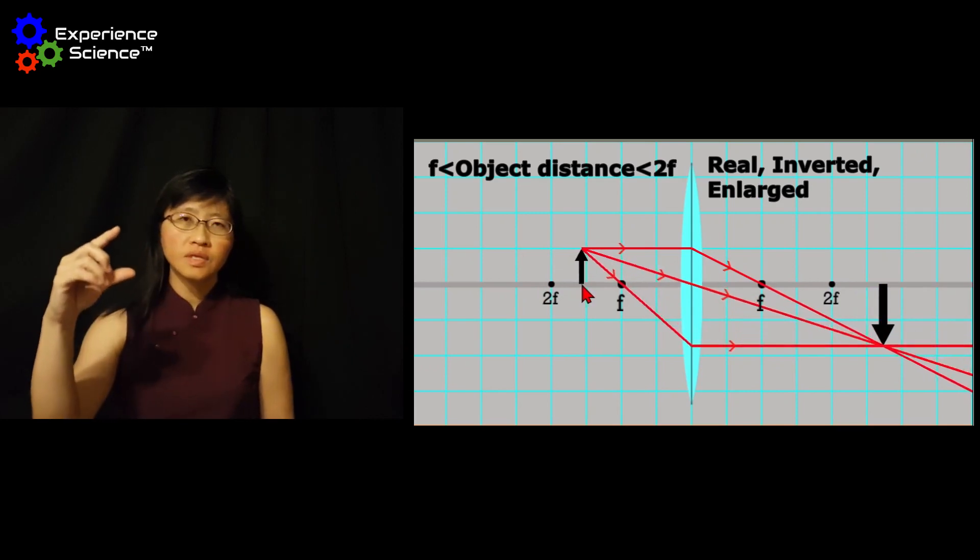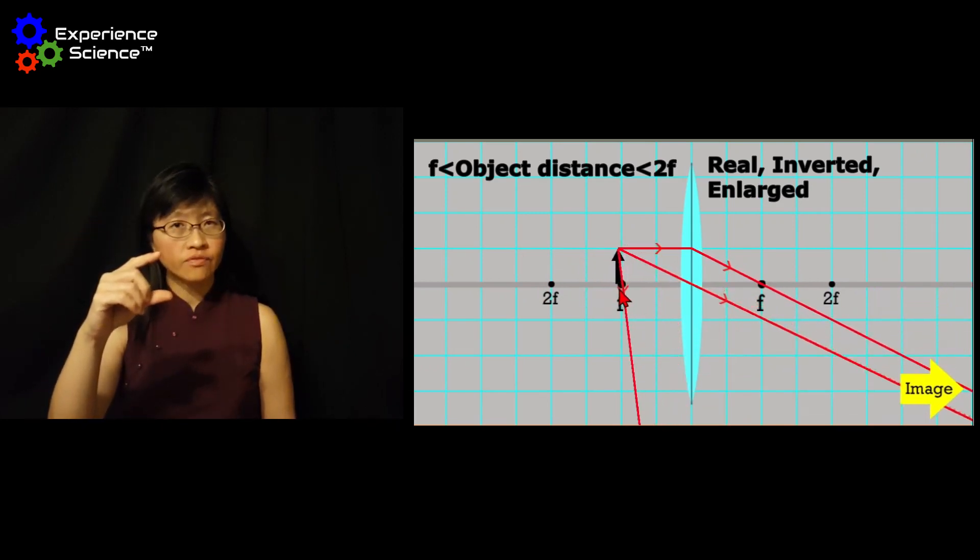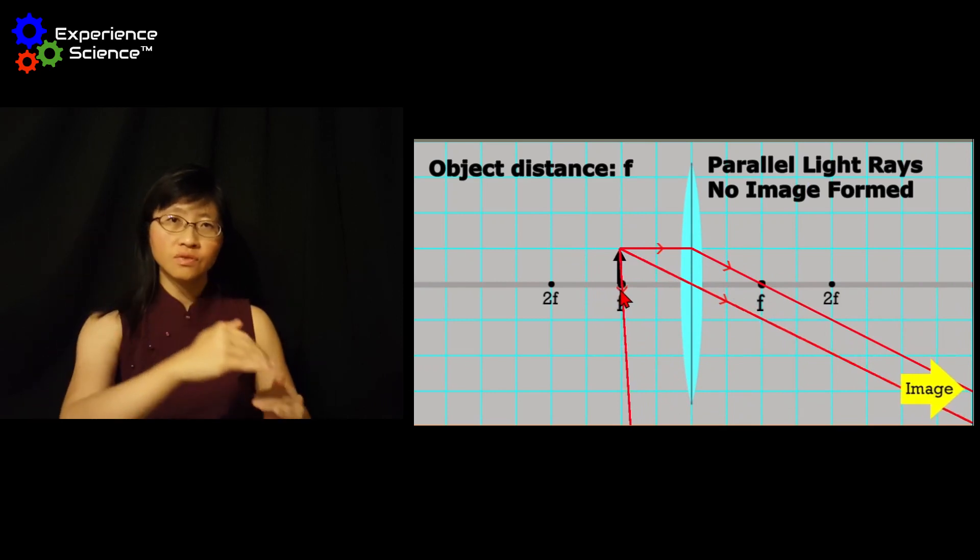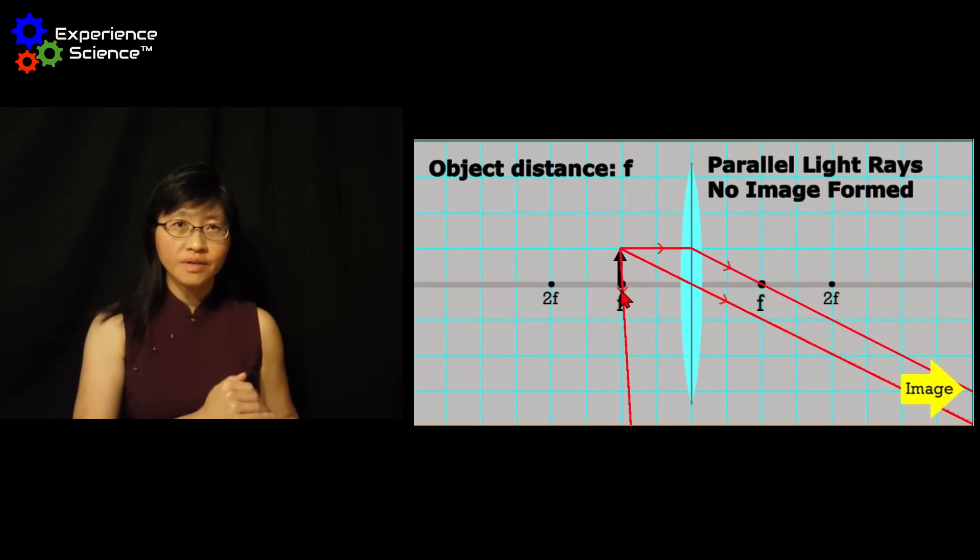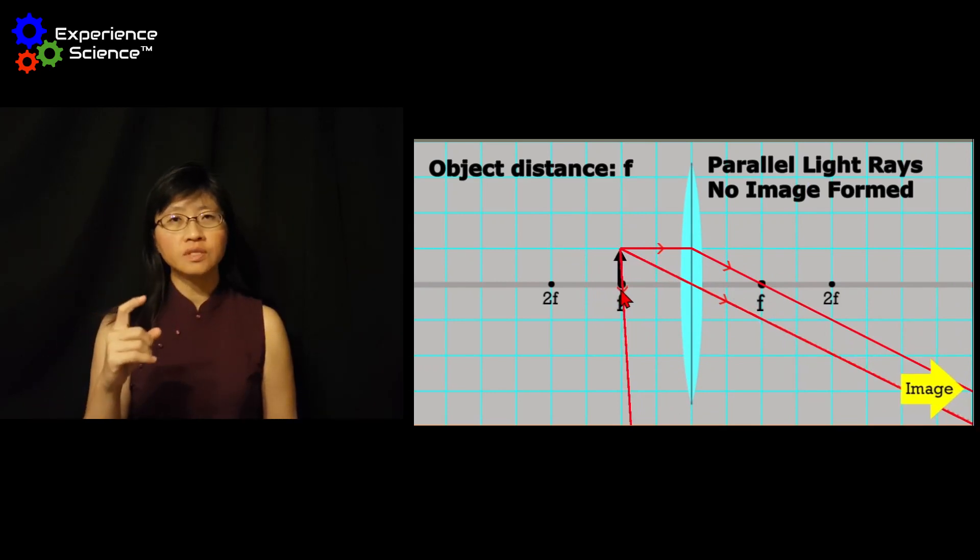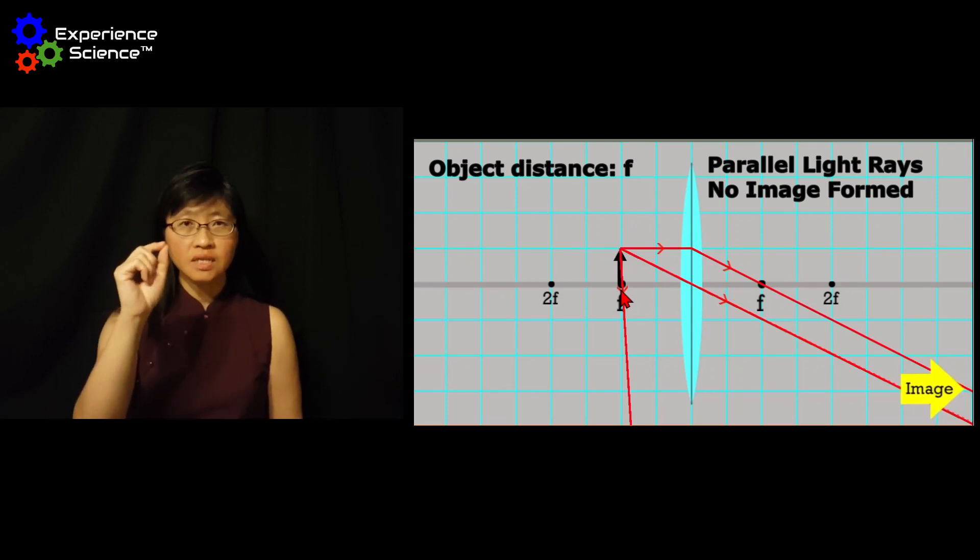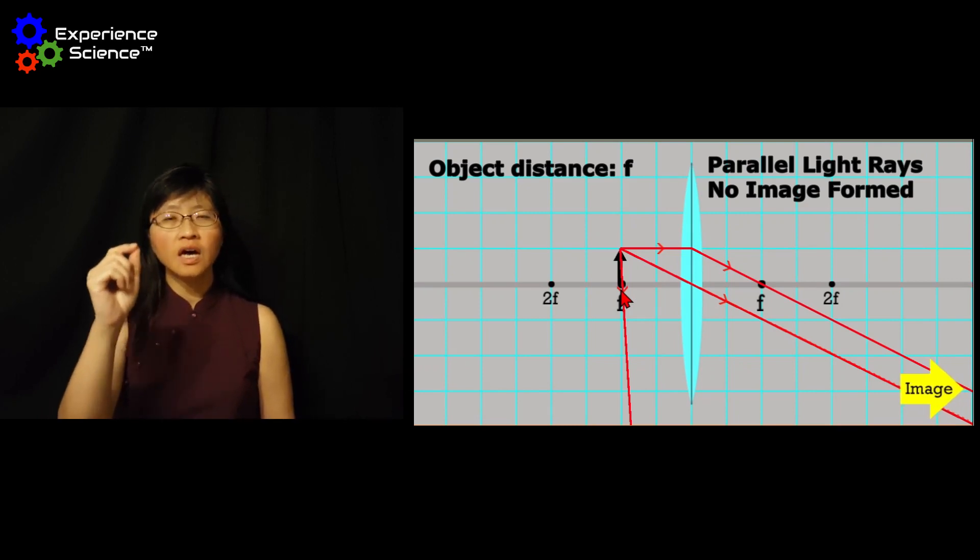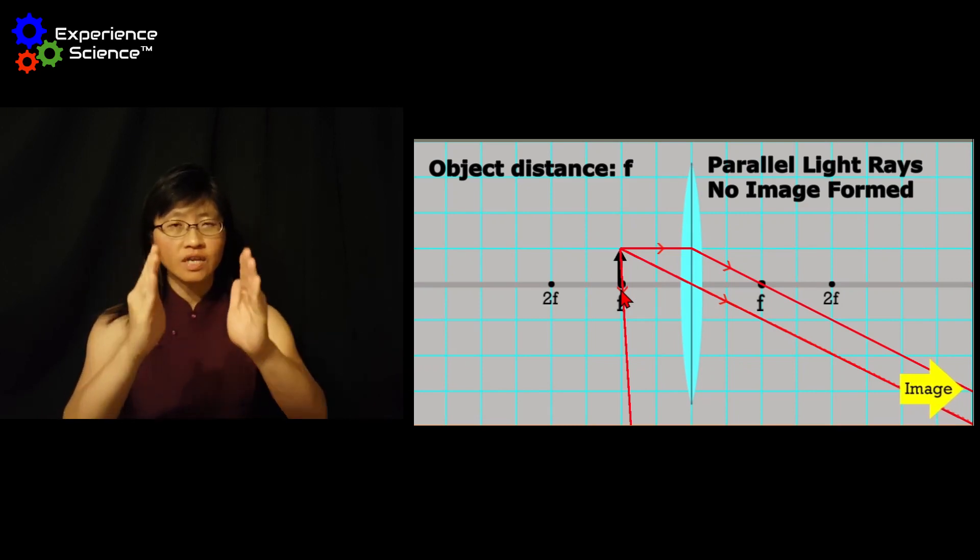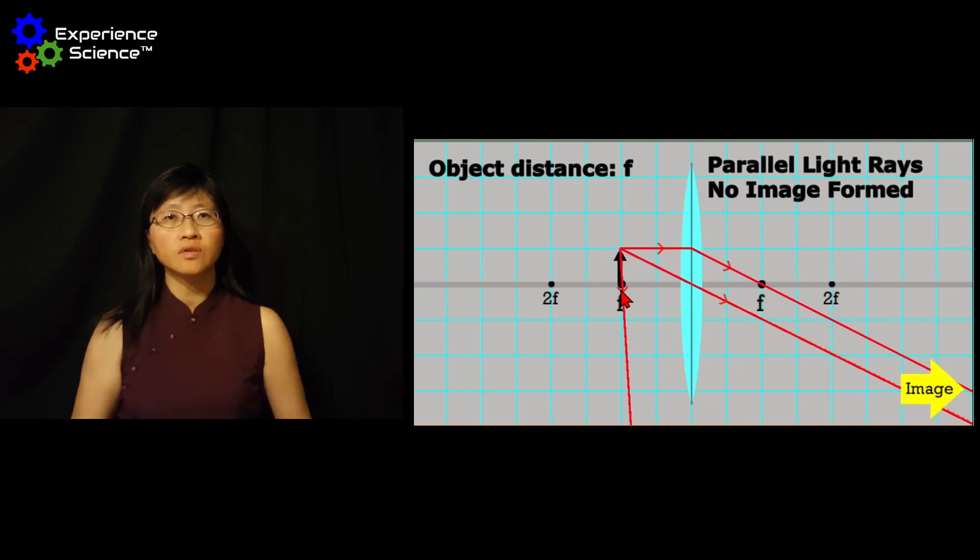You will notice that when the object is placed exactly at F, the light rays passing through the lens will be parallel. This is a scenario seen in a spotlight, where the point source of light is placed exactly at the optical center, and a parallel beam of light shines on the actor standing on the stage.